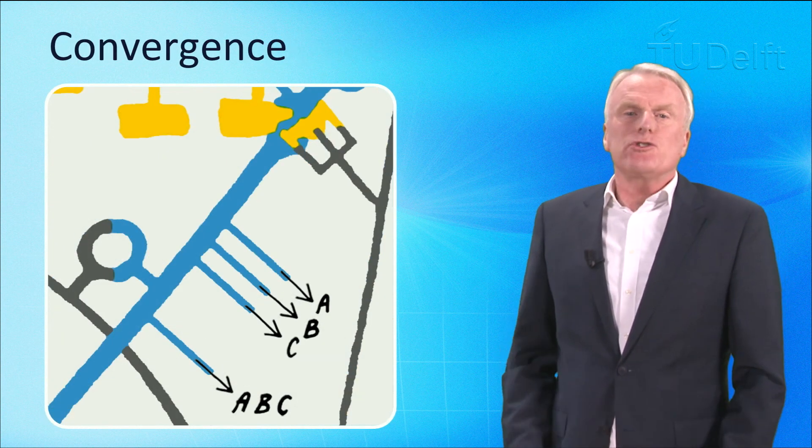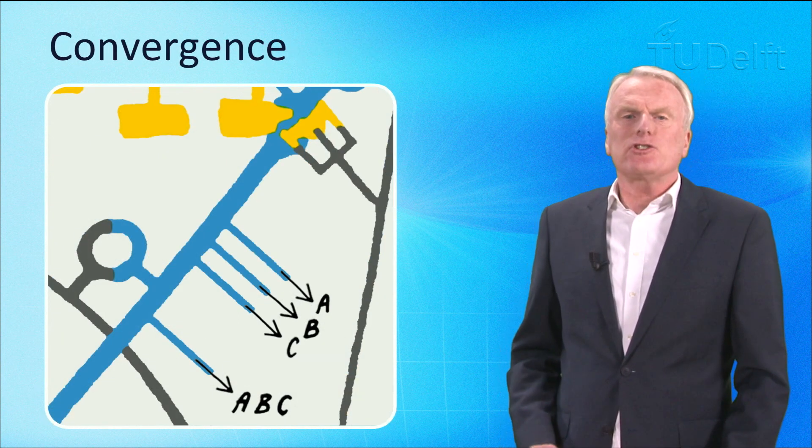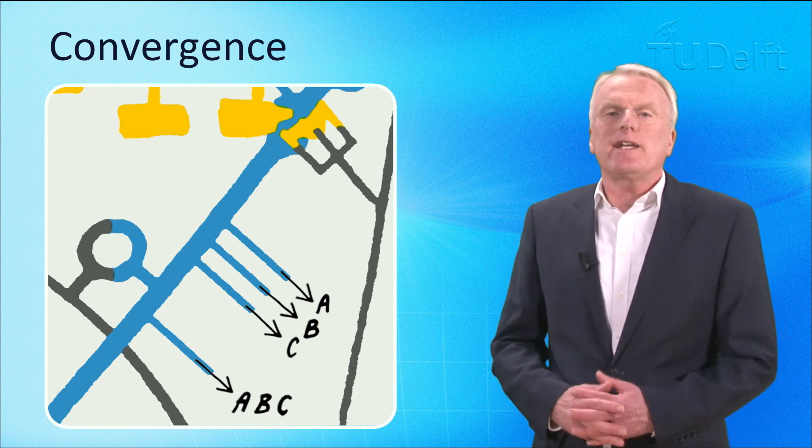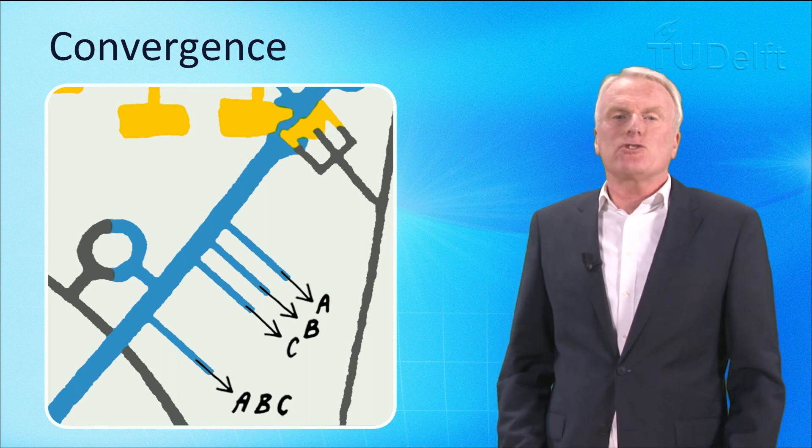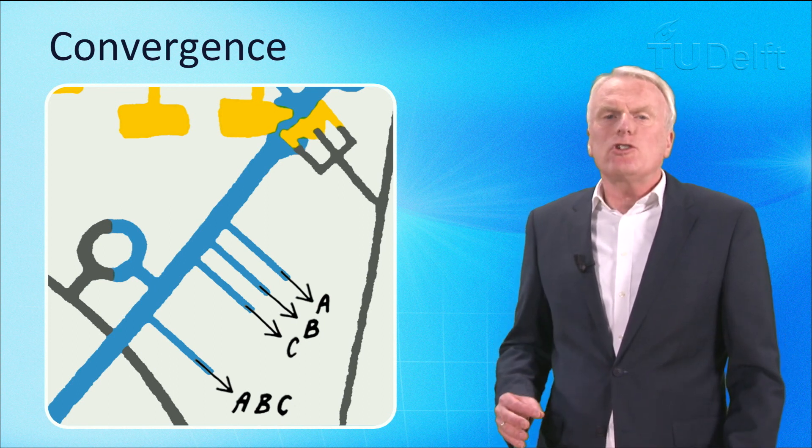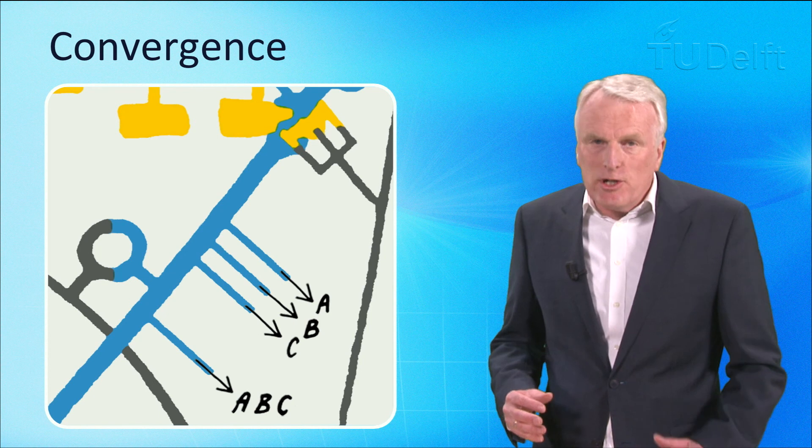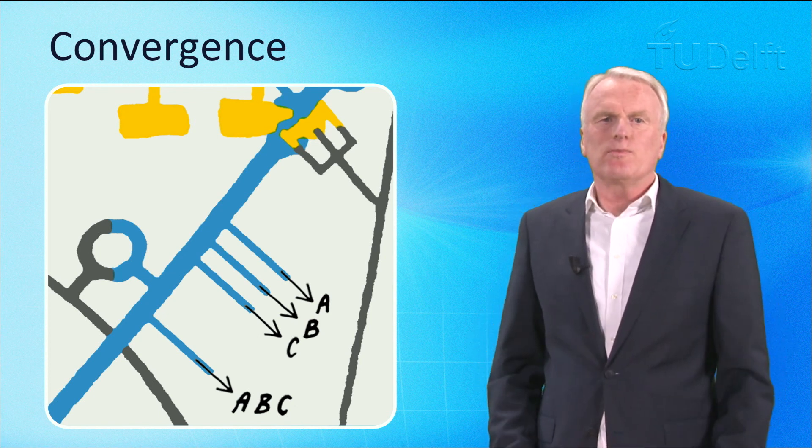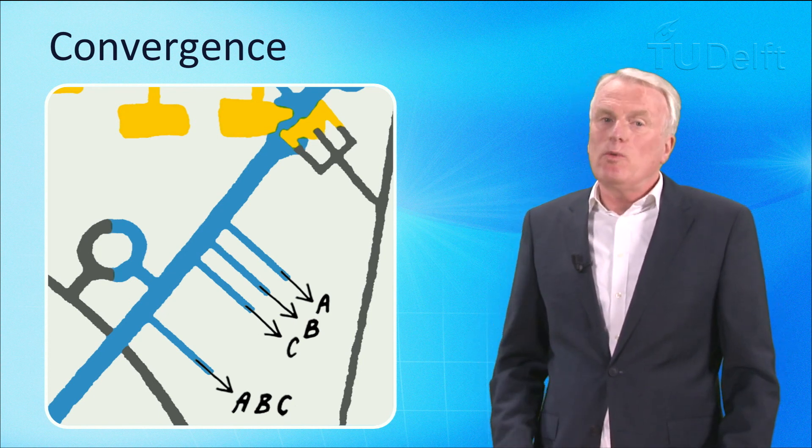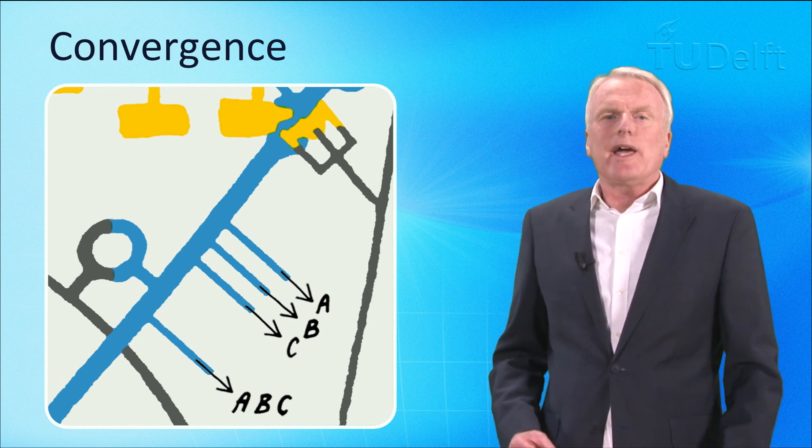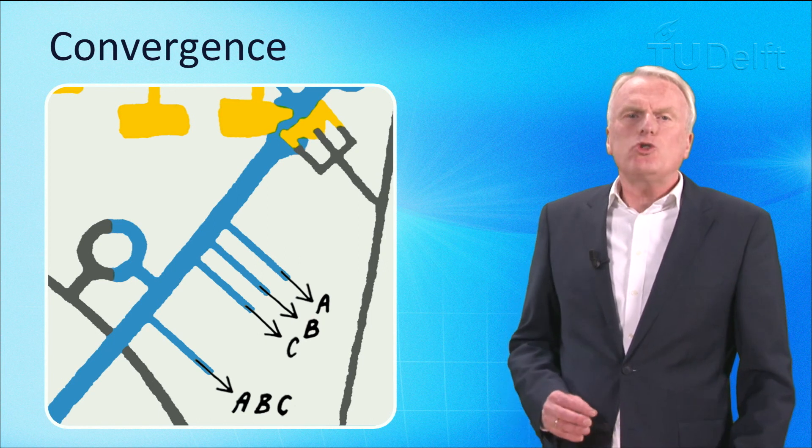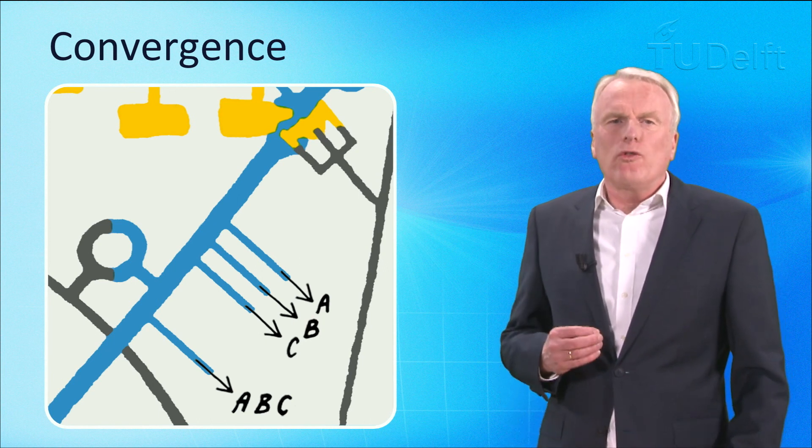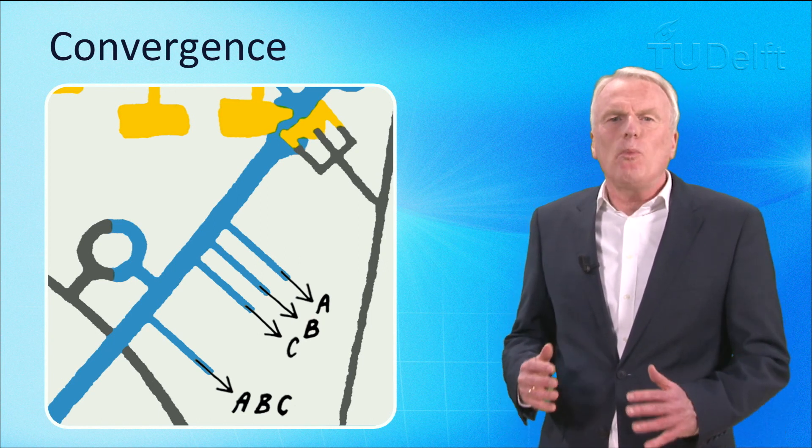By convergence we mean that infrastructures that used to be dedicated to one product or one service are finding more applications. Mono-functional infrastructures are becoming multi-functional. The electricity cable and the television cable can also be used for telephony or the internet. It goes without saying that convergence increases complexity.